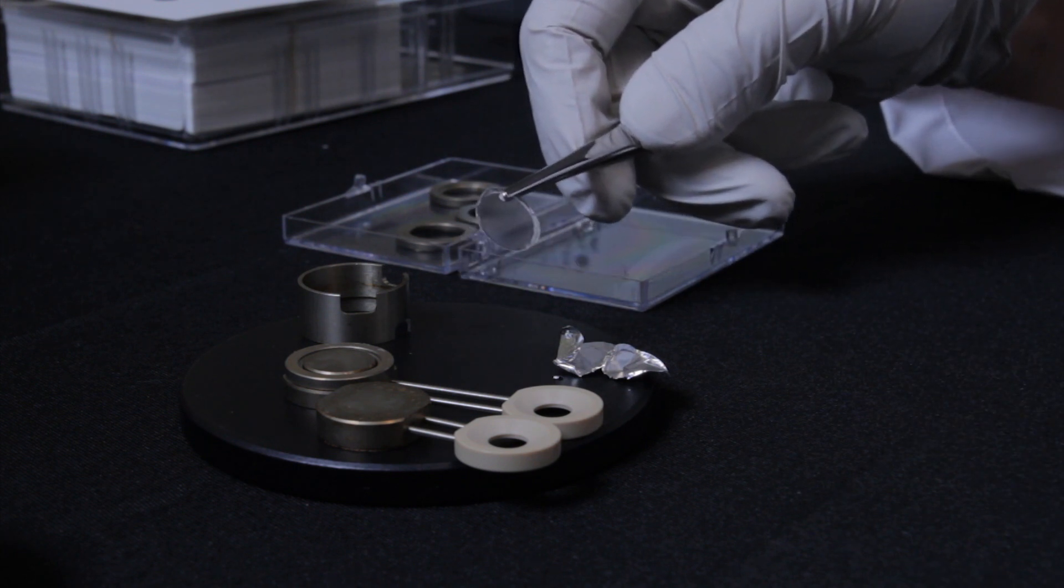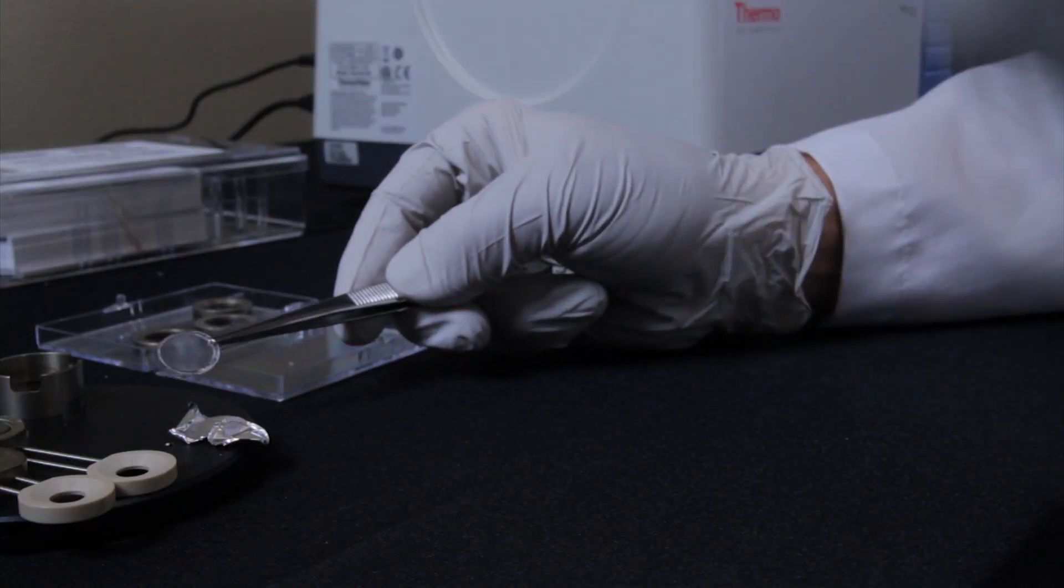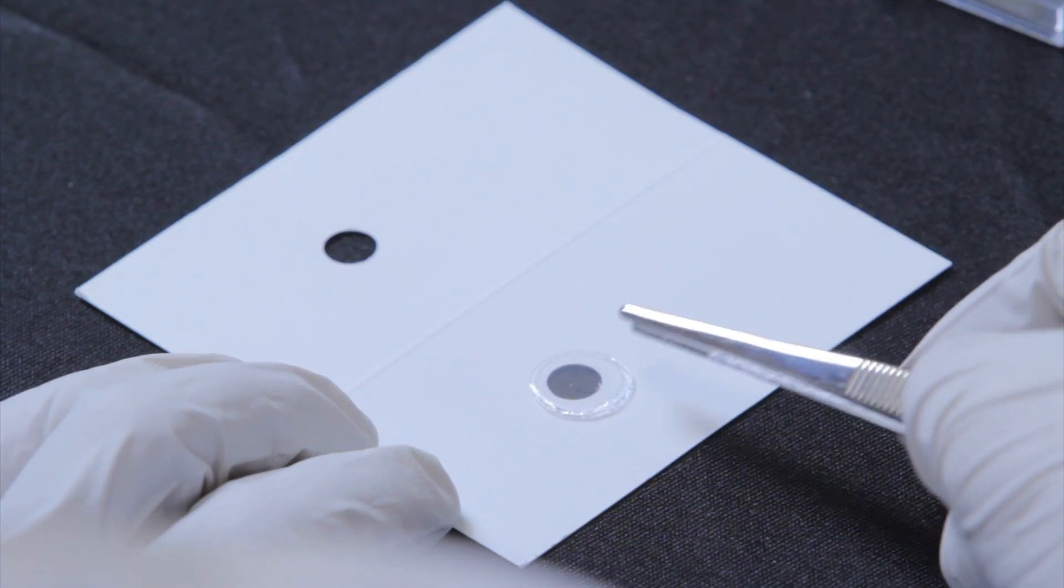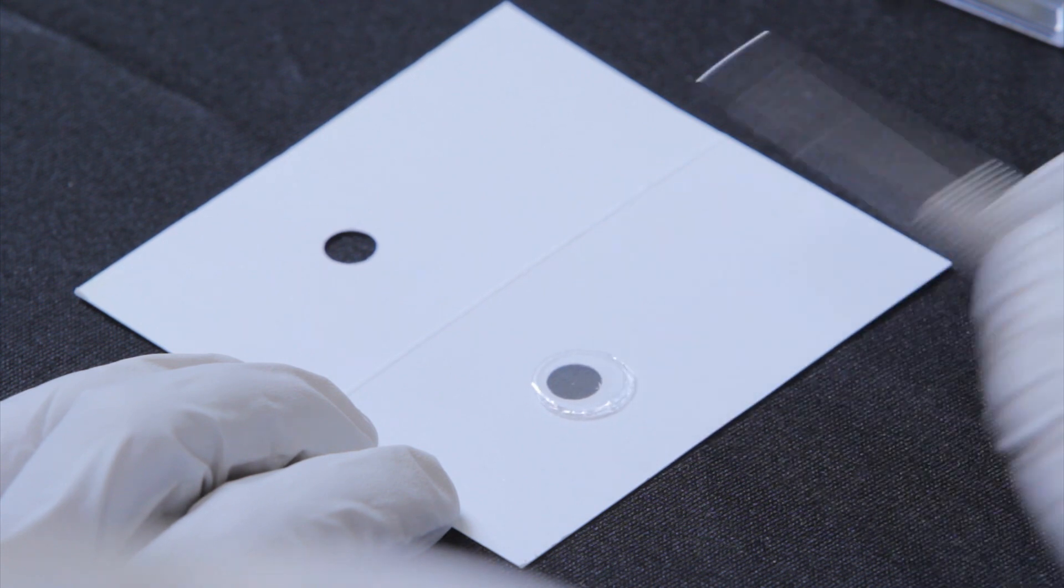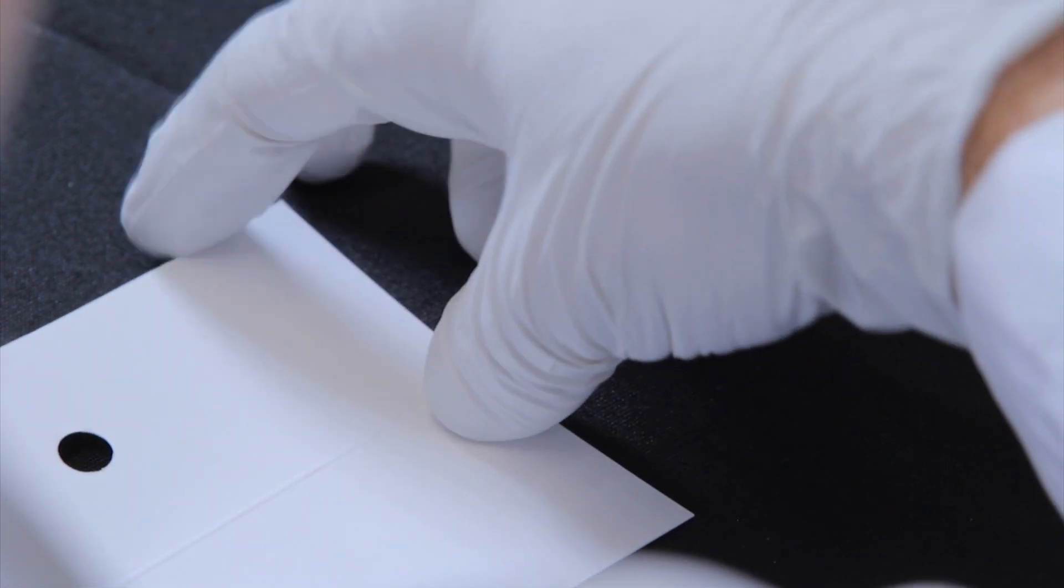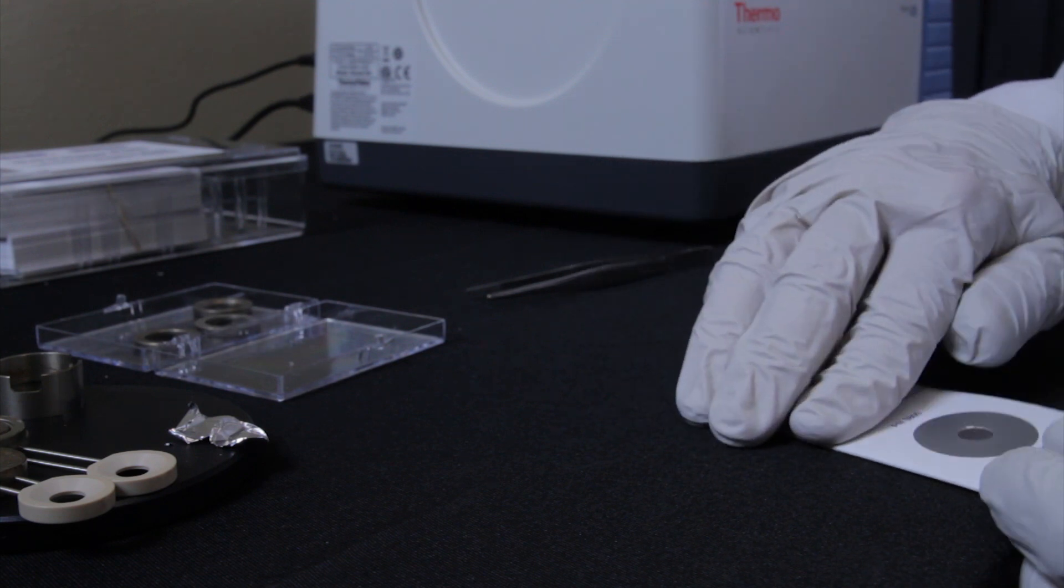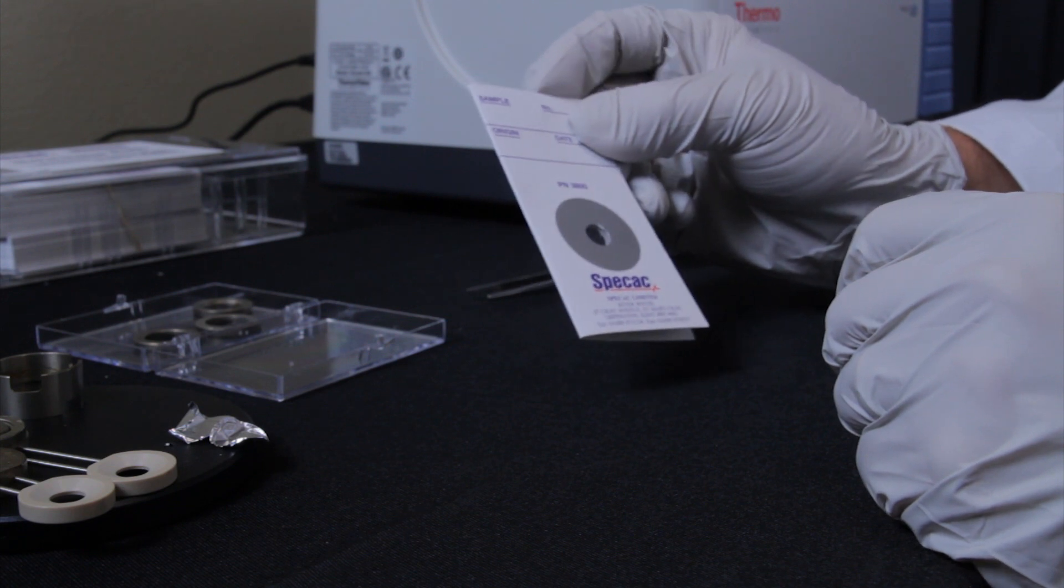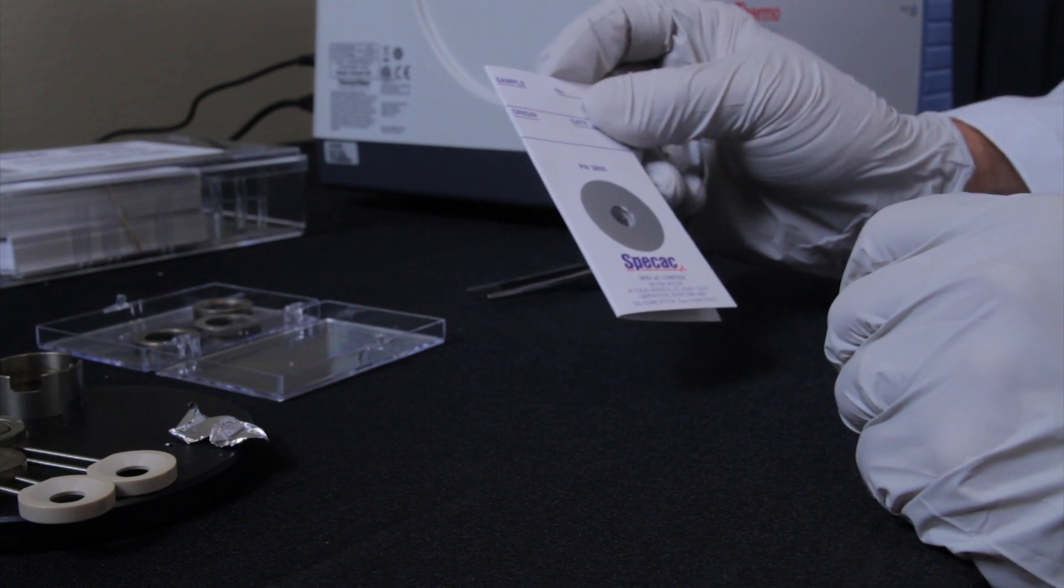This film can then be placed in a card for analysis. We line the film up over the hole of the card and fold the card over. This film in the card is now ready to be analyzed on the IS-5 spectrometer.